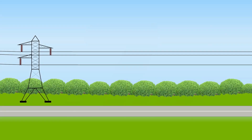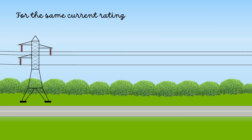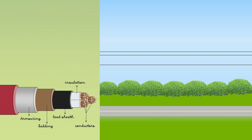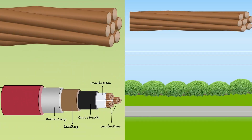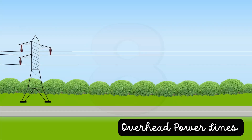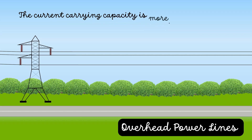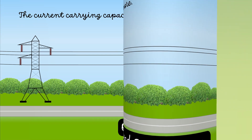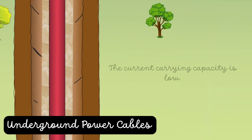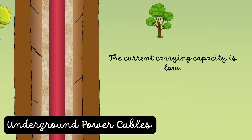For the same current rating, the underground cable requires larger conductors than overhead transmission lines. The current carrying capacity of the overhead power lines is more than the underground power cables.